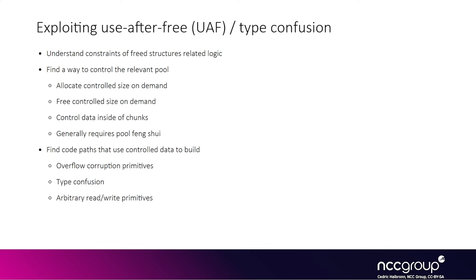During the use-after-free, you typically have some kind of primitive you can use when the kernel code executes. Generally you are looking for the ability to allocate things on the pool with a controlled size, on demand, allocate whatever you want, and sometimes free it whenever you want. You also want to control as much data as possible within that total allocated size. The process of doing all of that is typically called pool feng shui. To exploit these use-after-frees, you find some code path that uses the now-freed memory in an interesting way, which can often lead to overflows — for instance, if the code previously validated a length field in the structure, but now you can provide any large length, so when that code path executes it assumes the length is correct but an overflow happens.